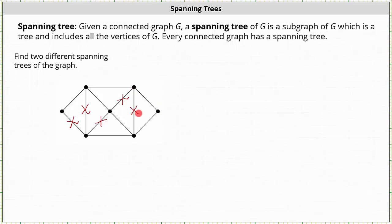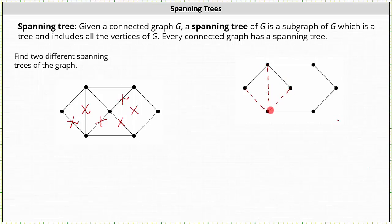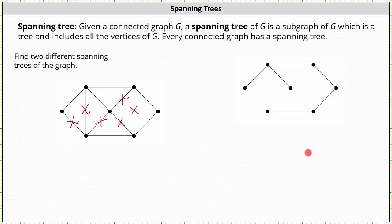Now we're not quite done yet. Notice there's still a cycle among these five vertices here. Let's go ahead and remove this edge. And now we're done. One possible spanning tree for the original graph is shown here on the right. You can notice how we removed this edge, this edge, this edge, this edge, this edge, this edge, and this edge to form the spanning tree.